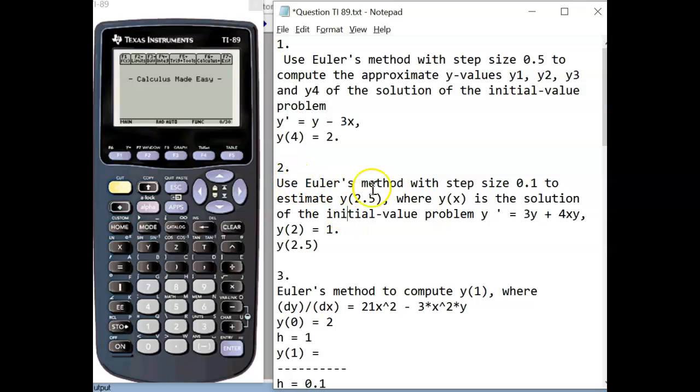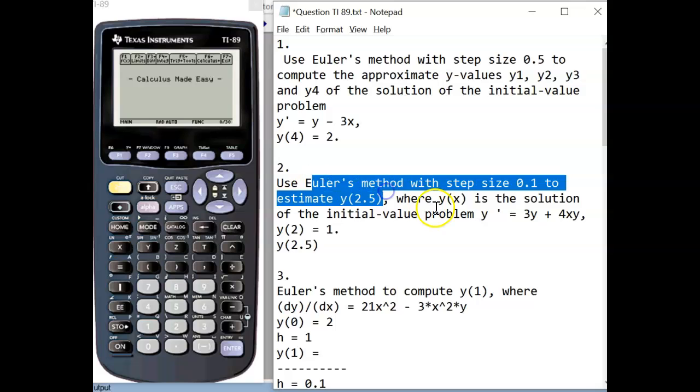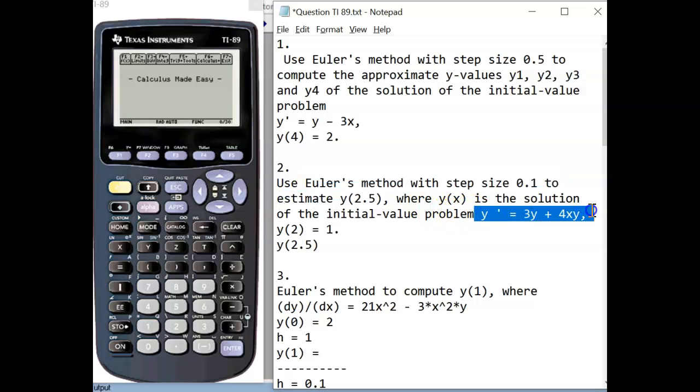Let's take a look at this question here. We have an Euler method question using this differential equation. y' = 3y + 4xy with initial condition y(2) = 1.